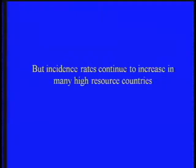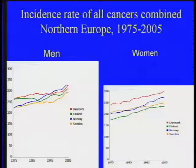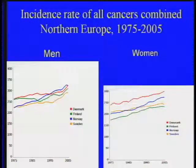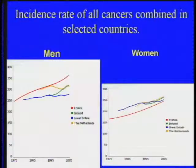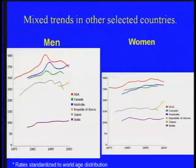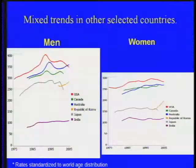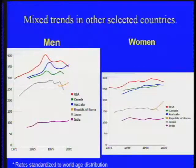Despite the decrease in death rates across Western countries, incidence rates continue to increase in nearly all of them. In the Scandinavian countries and Finland, there is an increase in both men and women. The same is seen in France, Ireland, Great Britain, and the Netherlands. In the U.S., there has been a recent decrease in incidence rates from all cancers combined over the last five to seven years, but mostly at best the rates are flat.